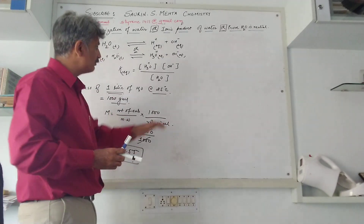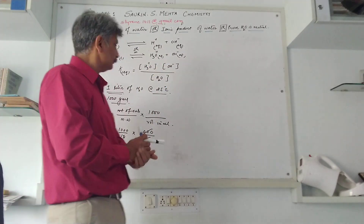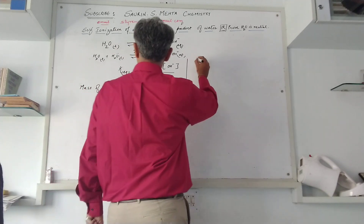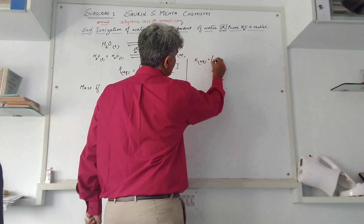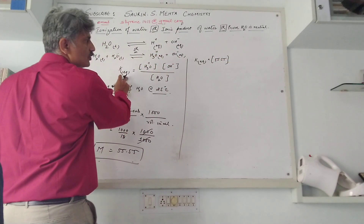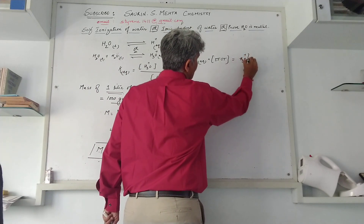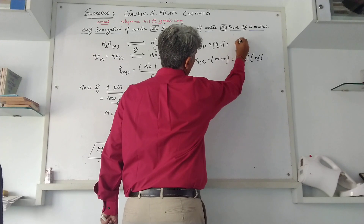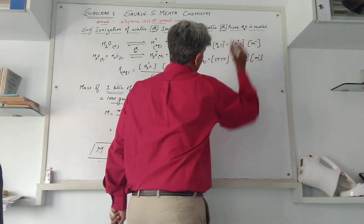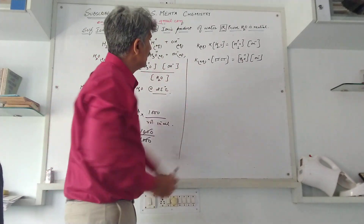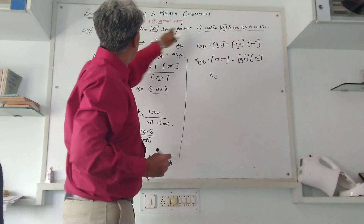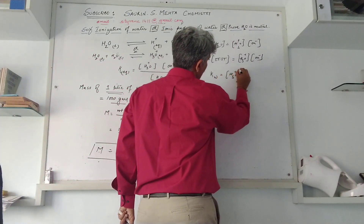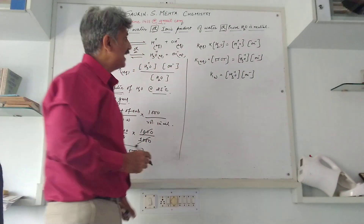At 25°C, the concentration of undissociated water is always 55.55 mol/L. So we write Keq multiplied by 55.55 equals the concentration of H⁺ and OH⁻. This product gives us a new constant — the ionic product of water — written as Kw, which equals the concentration of H⁺ multiplied by the concentration of OH⁻.